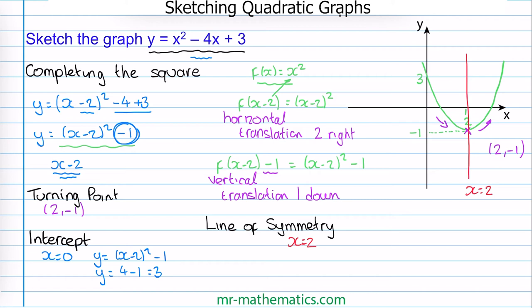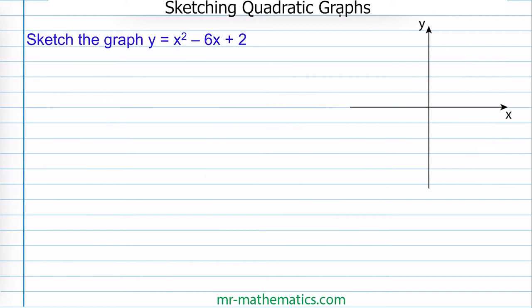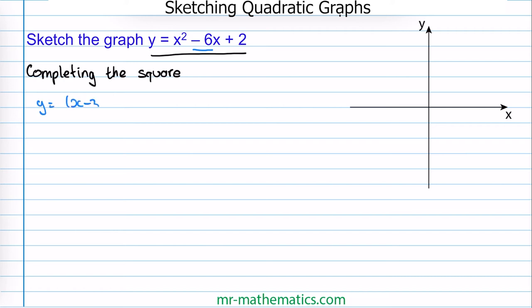Okay, let's try another question. We're going to sketch a graph of y is equal to x squared minus 6x plus 2. Do you want to try and complete the square for this quadratic? You can pause the video and resume it when you're ready. So again we're going to have half the coefficient of x, which is half of negative 6. So we have y is equal to x minus 3 squared. Now we complete the square by taking away 9 and then adding 2. So when we simplify we have x minus 3 squared take away 7.